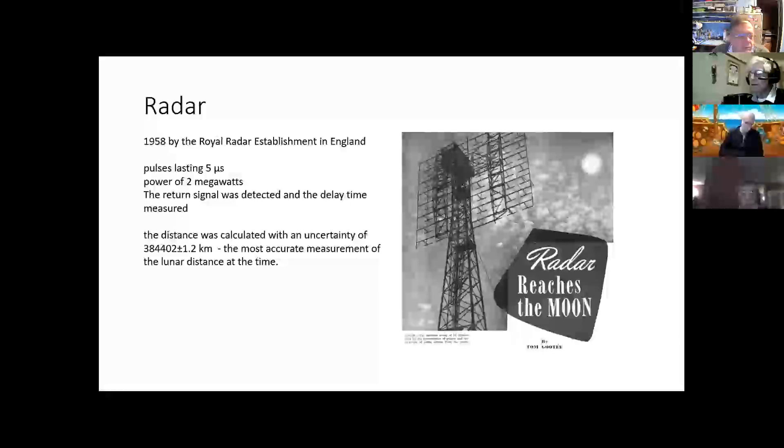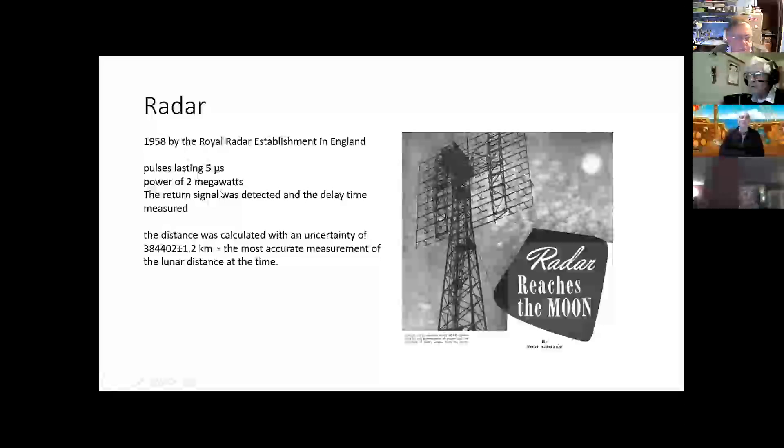Now, I'm just going to say that, you know, we know the distance to the Moon much more accurately these days. In 1958, we bounced some radar beams off it with very short pulses using two megawatts of power. You have to use a lot of power if you're going to send a radar pulse out and receive the reflection back. But it gave us the distance to the Moon to this number here, 384402 kilometers, plus or minus just one kilometer. And so we were able to make much better measurements than that.